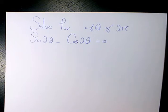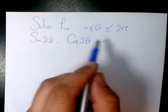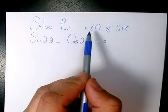In this video I want to solve this trigonometric equation which is sine 2 theta minus cosine 2 theta equals to 0 and theta is changing from 0 to 2 pi.